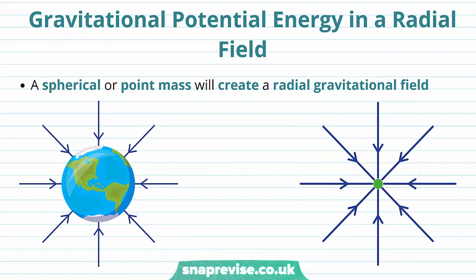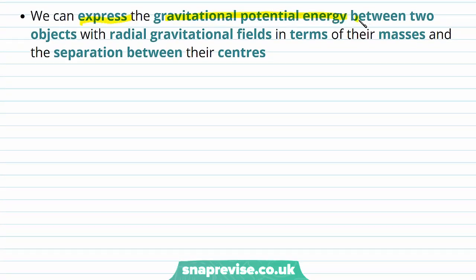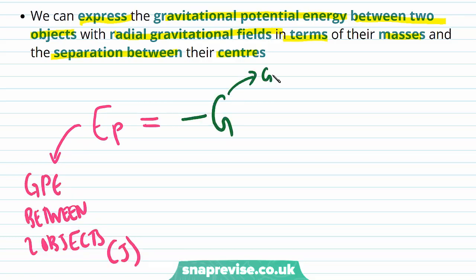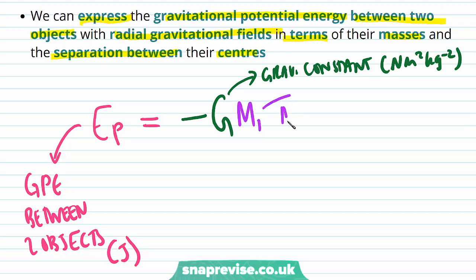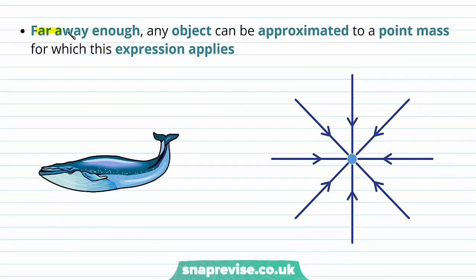Now let's look at gravitational potential energy in a radial field. A spherical or point mass creates a radial gravitational field. We can express the gravitational potential energy between two objects as: Ep = −G × M1 × M2 / r, where r is the separation between their centres. Far enough away, any object can be approximated as a point mass for which this expression applies.